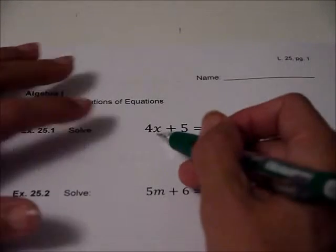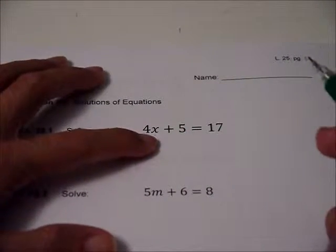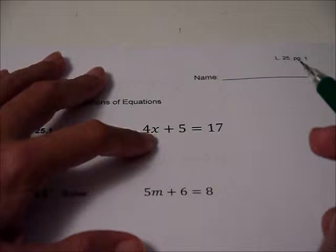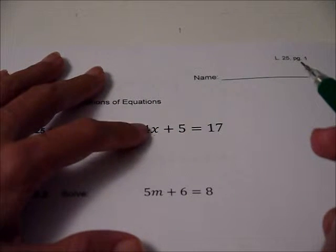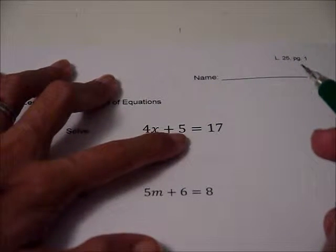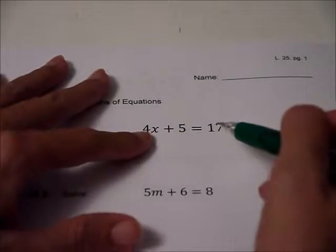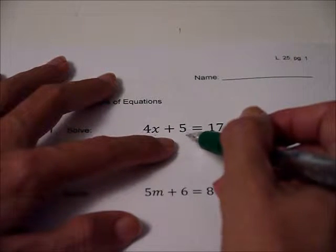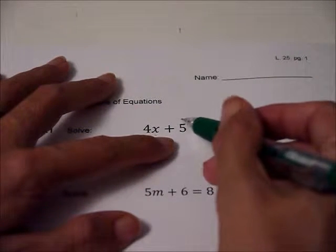My trick is I'm trying to get x alone, right? So I get rid of the stuff that's further from x. x and 4 have a little more of an intimate relationship, so I'm just going to wait to tear them apart and get rid of this 5 first. So a lot of people don't know what you do first. Get rid of the adding and subtracting, this part first, okay? Not this.